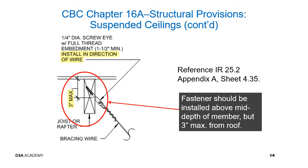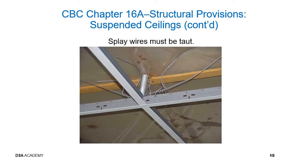This picture shows how to properly install bracing wire with a screw eye. The following photo of bracing wire shows at least a couple of issues: first, the wire is not taut; second, there seem to be only three turns of wire at the connection to the main runner, and they are not tight turns at all.